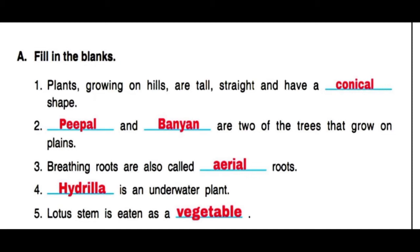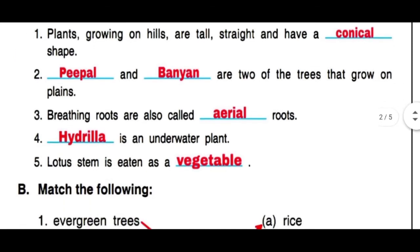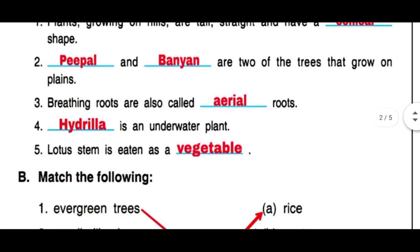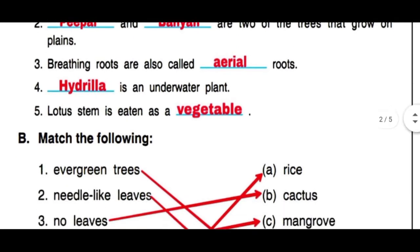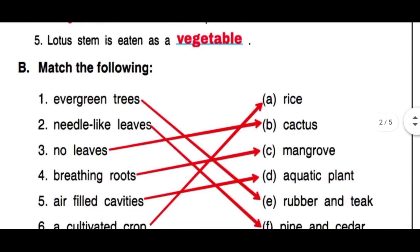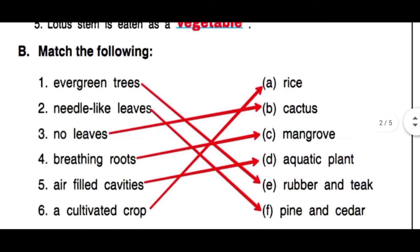Question 3: breathing roots are also called aerial roots. Fourth: hydrilla is an underwater plant. And fifth: lotus stem is eaten as a vegetable.